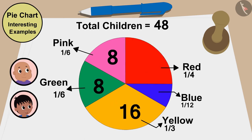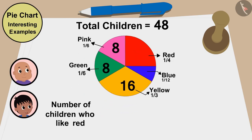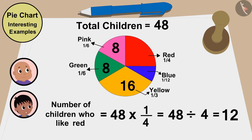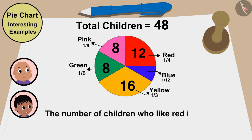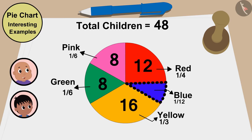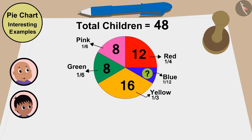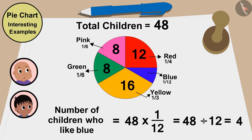The share of children who like red is also quite large, but a little smaller than yellow. Let's find out. The number of children who like red will be 48 times one-fourth — or 48 divided by 4 — which is 12 children. Yellow is liked by 16 children, so the number of children who like red is four less than those who like yellow. And Raju, I like blue color a lot, but in this pie chart the share of children who like blue is the smallest. The number of children who like blue is 48 times one by 12 — or 48 divided by 12 — that is four.